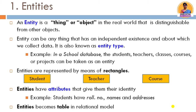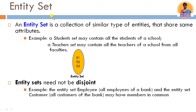An entity set is a collection of similar type of entities that share the same attributes. Like a students set may contain all students of a school, and a teachers set is a collection of teachers. Entity sets need not be disjoint — for example, in a bank, a person who is a customer of the bank can also be an employee of the bank, like a manager who also holds an account there.